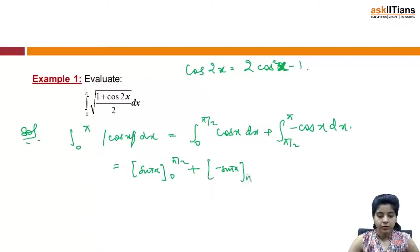This becomes 2. This was sin 90 minus sin 0 plus minus sin pi plus sin 90, which equals 2. So you see, this application of properties is quite simple.